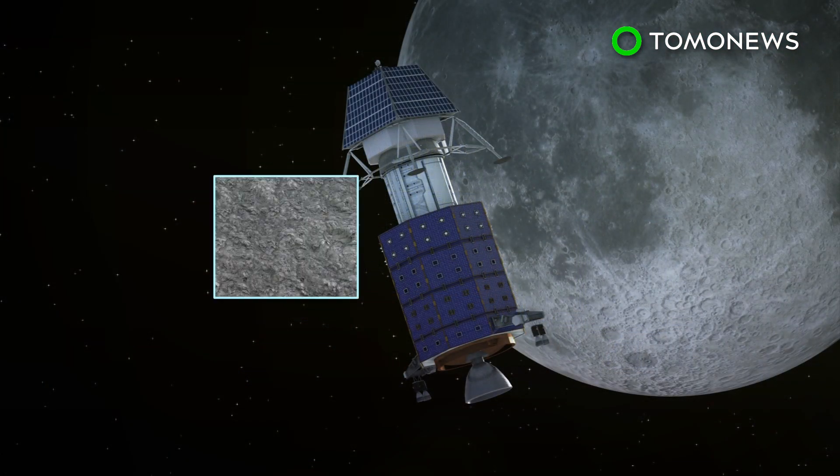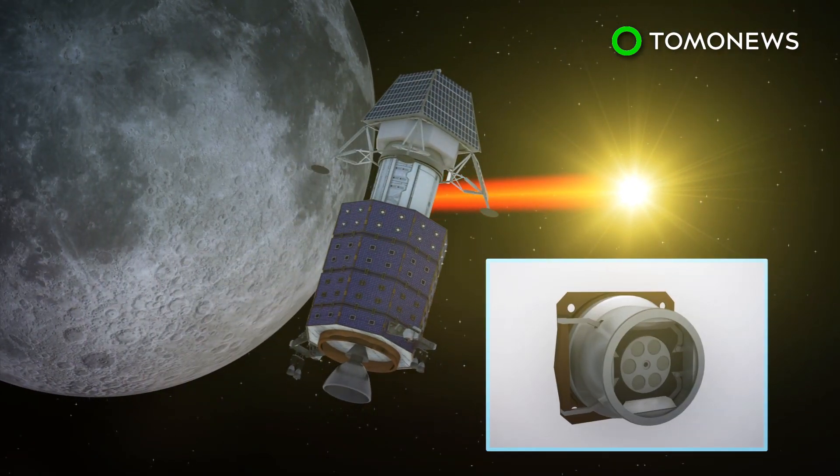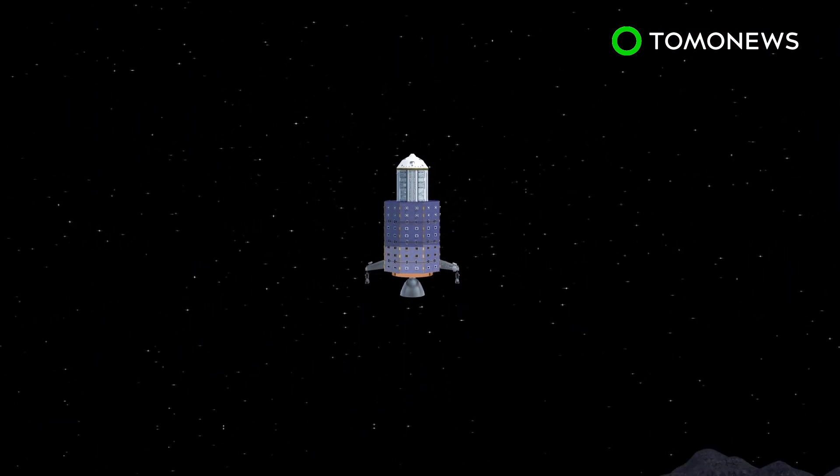The orbiter will be carrying items such as a terrain mapping camera, a solar x-ray monitor, an imaging IR spectrometer, and a dual frequency synthetic aperture radar.